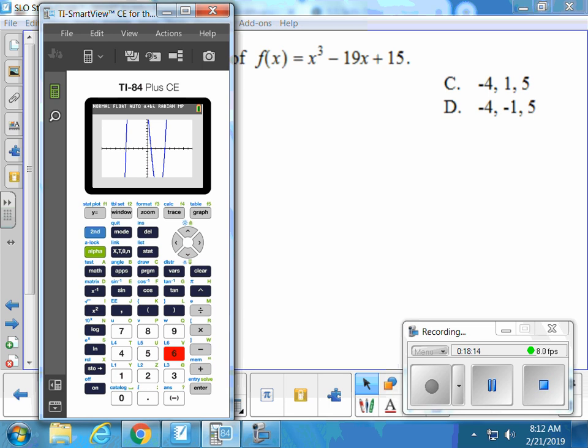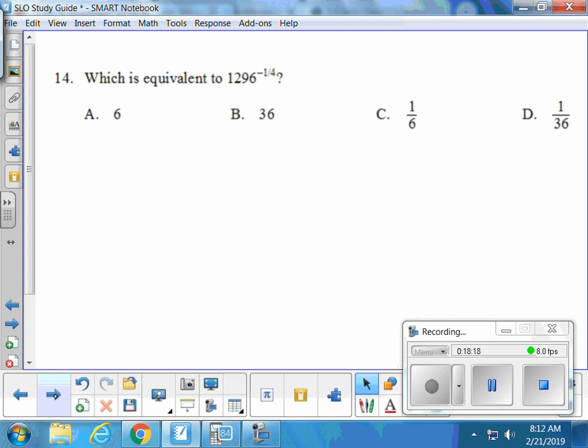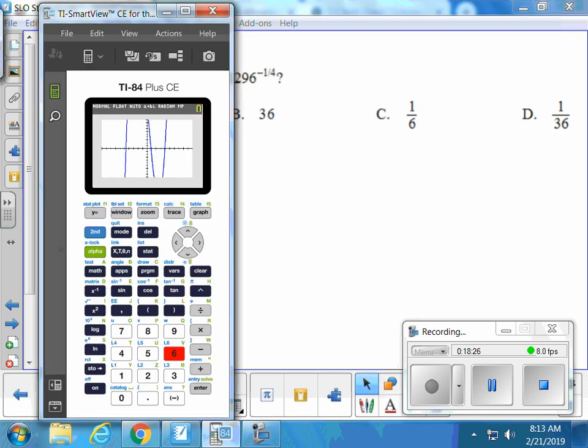Number 14 should be a breeze. You can just type it in your calculator. You remember where the fraction button is, right? If you get a decimal at the end, you just do math, enter, enter. So it's 1296 to the negative 1 divided by 4 power. If you want to fraction that answer, math, enter, enter. 1 over 6.